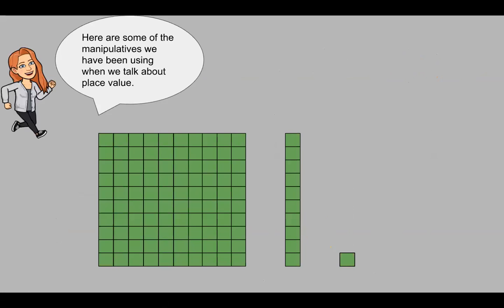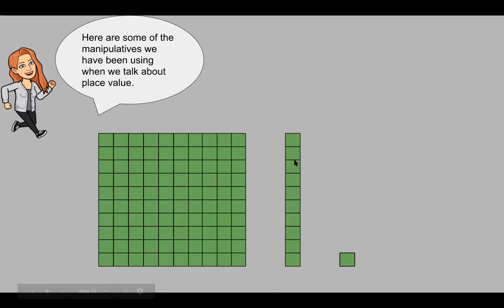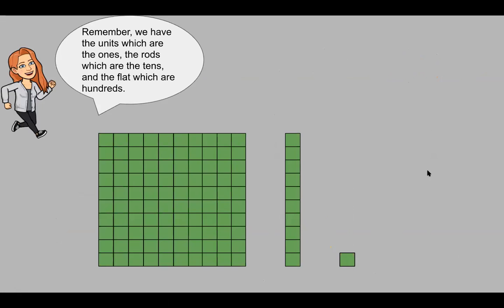Here are some of the manipulatives that we have been using when we talk about place value. Remember, we have the units right here, which are the ones. We have the rods right here, which are the tens. And we have the flats right here, which are hundreds. Again: ones, rods for tens, and flats for hundreds.